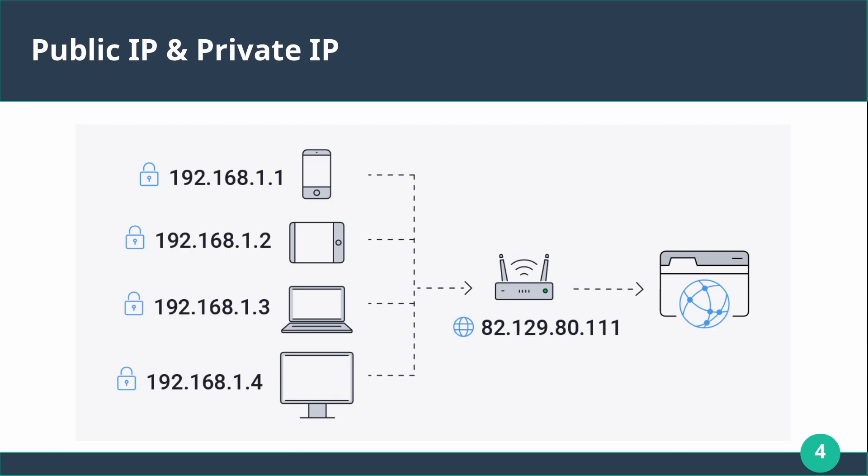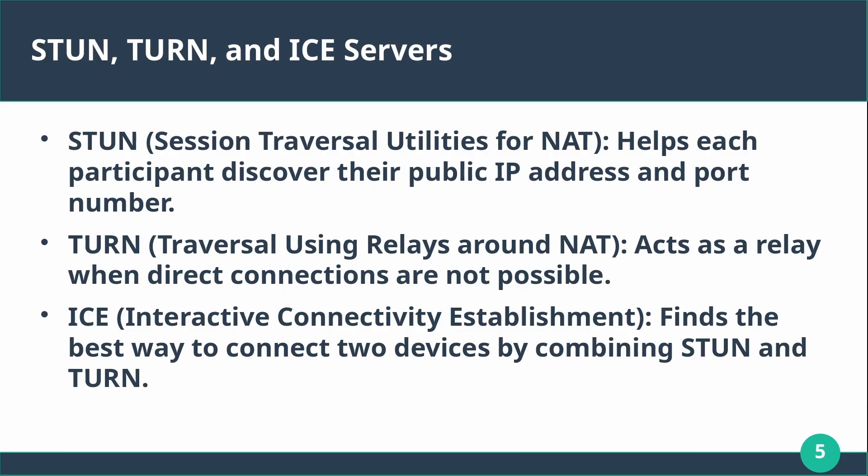For example, when you visit a website, your request is sent to the website's public IP address. A private IP address, on the other hand, is used within a private network like a home or office network and is not routable on the internet. Private IP addresses are assigned by routers or network administrators. As you can see, a public IP address is assigned to the router, and that router assigns private IP addresses to the devices connected to it.